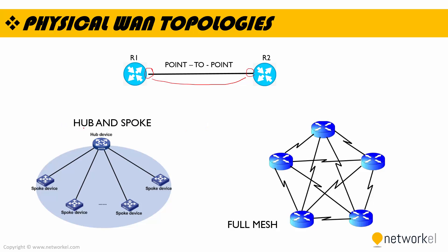We have a hub-and-spoke topology. In this topology we have a hub device at the center and we have spokes connected to that hub. Spokes communicate with each other over that hub.